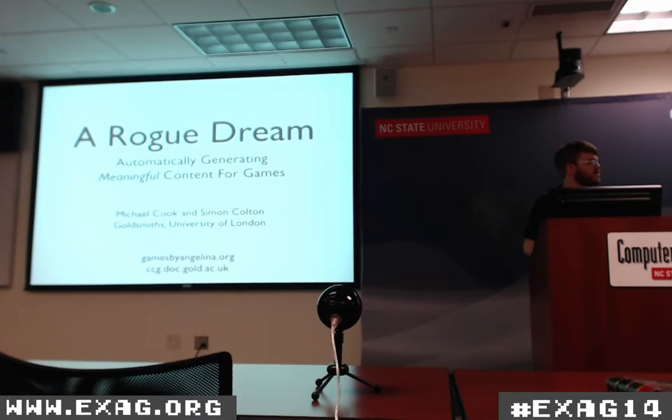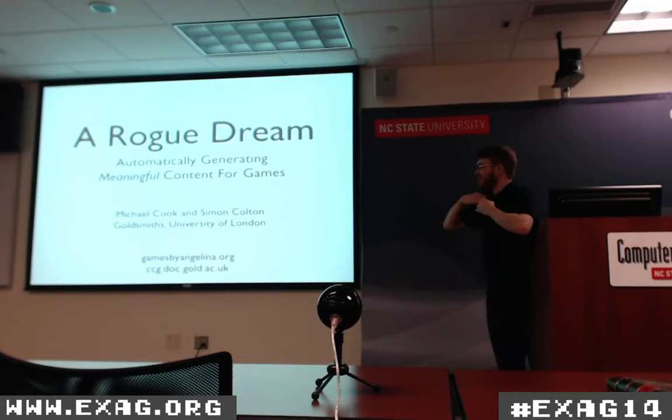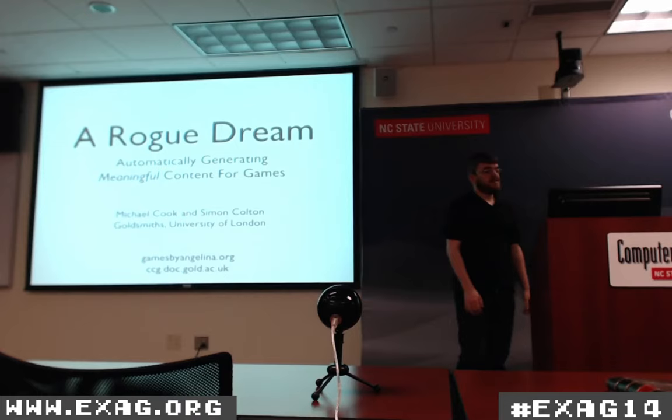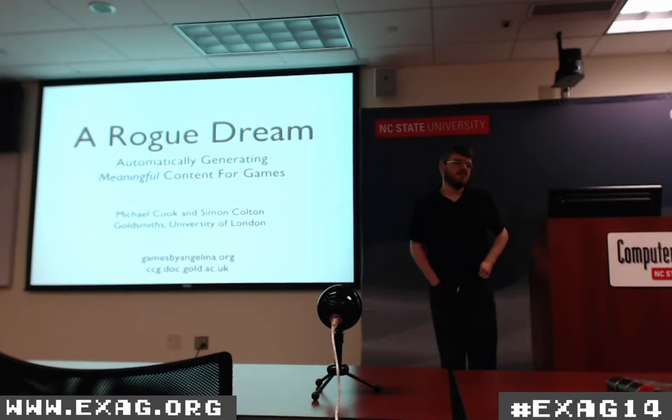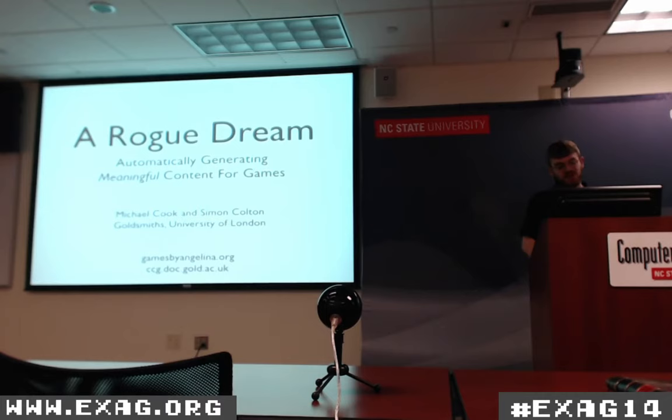My name is Michael Cook. I work with Simon Colton at Goldsmiths at the University of London and Imperial College sometimes as well. But we don't go there anymore, like Ravenholm. I'm here to talk to you today about not my PhD work per se, but a little project called A Rogue Dream. The actual title is: Automatically Generating Meaningful Content for Games.